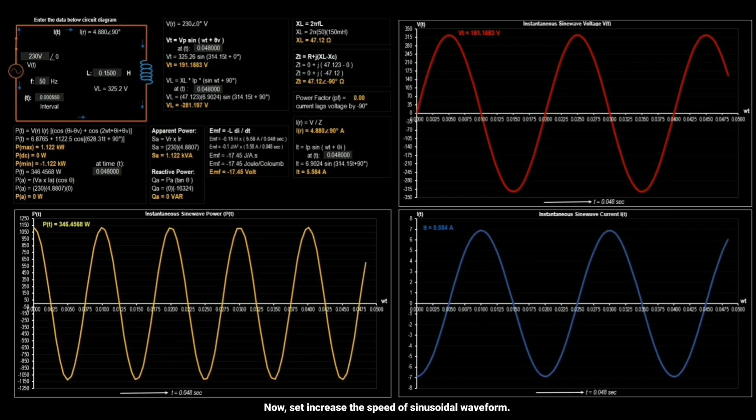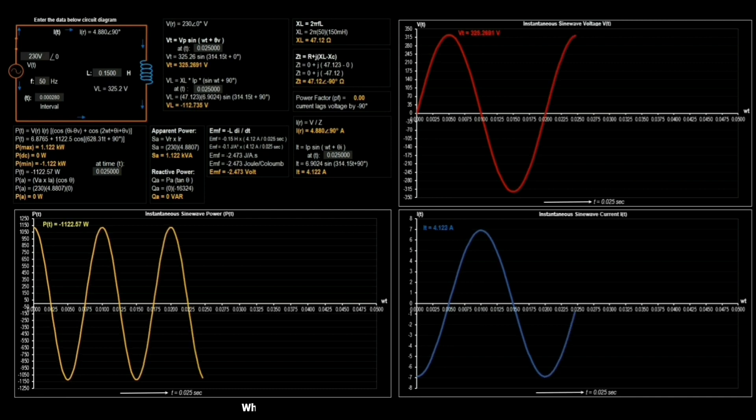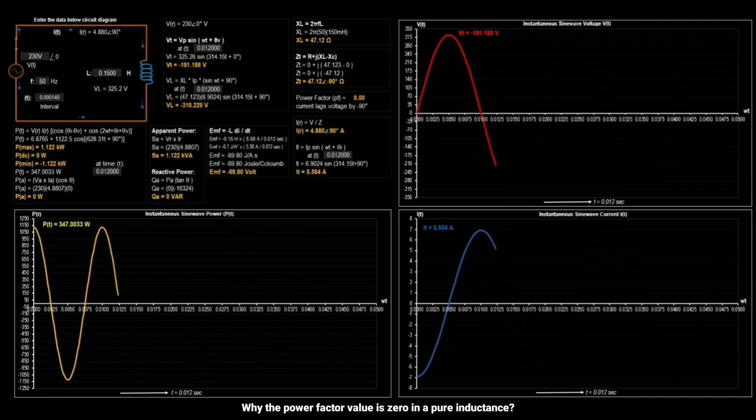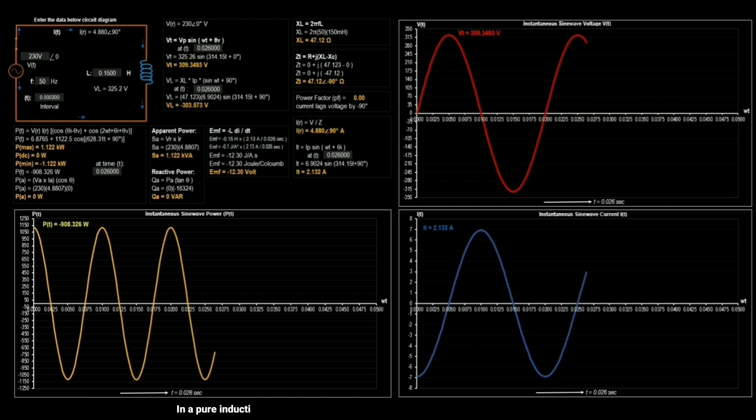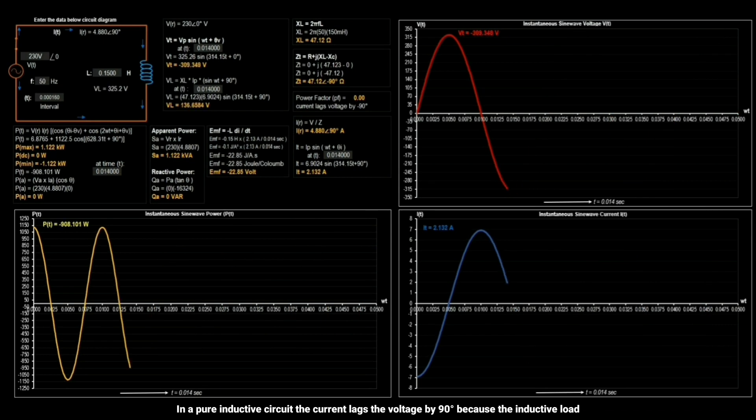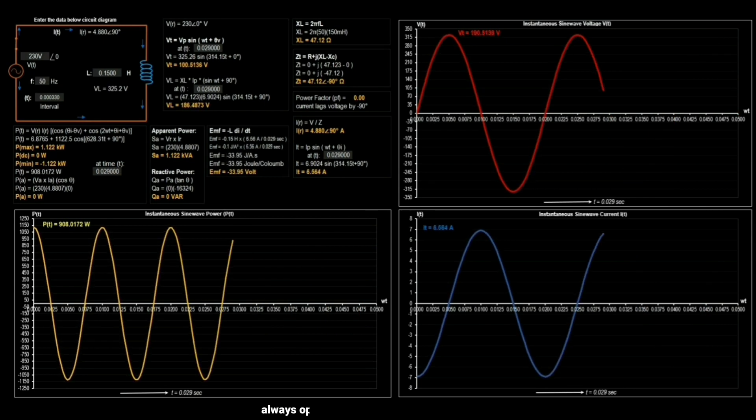Now set to increase the speed of sinusoidal wave form. Why the power factor value is 0 for pure inductance? In a pure inductive circuit the current lags the voltage by 90 degrees because the inductive load always opposes the rate of change of current.